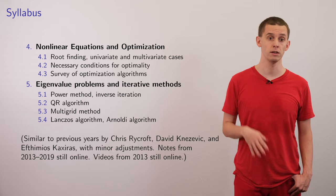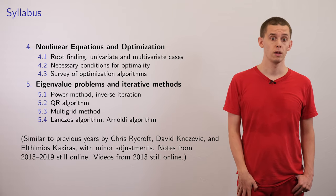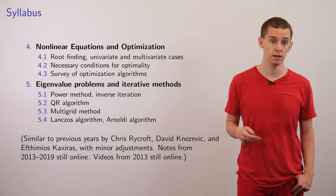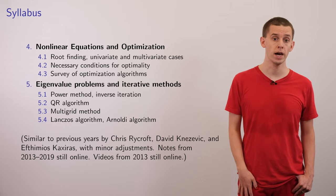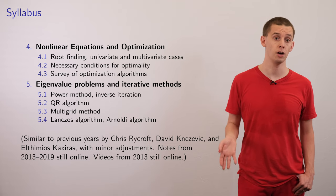We'll also look at the QR algorithm, which is kind of an improved method that you can use. We'll also touch on the multigrid method, which is a very powerful method for solving large linear systems. And we'll also look at some Krylov methods, such as the Lanczos algorithm and the Arnoldi algorithm.